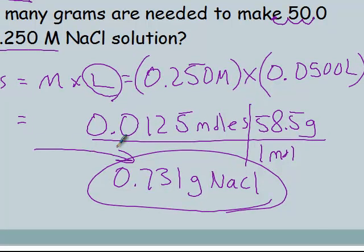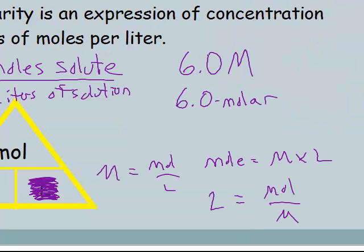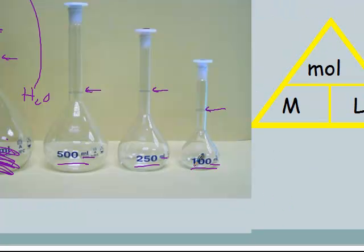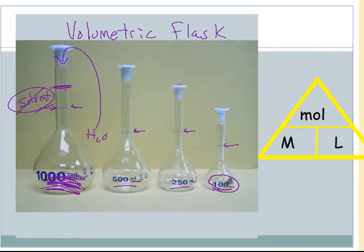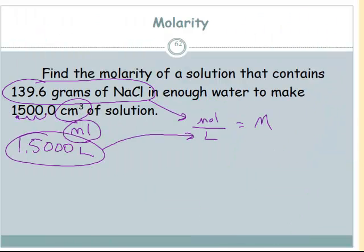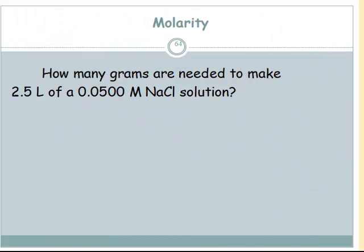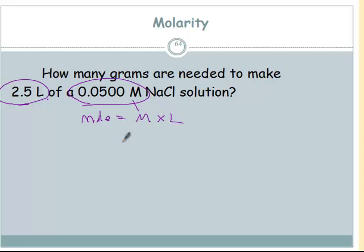We would put that into a 50 milliliter volumetric flask. The smallest one listed here is 100 mL, but they go down to 25s, 10s, and even smaller. For the next problem, how many grams are needed to make a solution — same question, but this time the volume is already in liters. So moles equals molarity times liters, then multiply by 58.5 grams per mole to get grams.